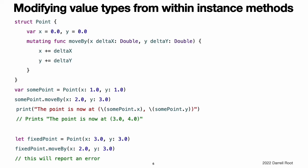Modifying value types from within instance methods. Structures and enumerations are value types. By default, the properties of a value type cannot be modified from within its instance methods. However, if you need to modify the properties of your structure or enumeration within a particular method, you can opt into mutating behavior for that method. The method can then mutate, that is, change, its properties from within the method, and any changes that it makes are written back to the original structure when the method ends.